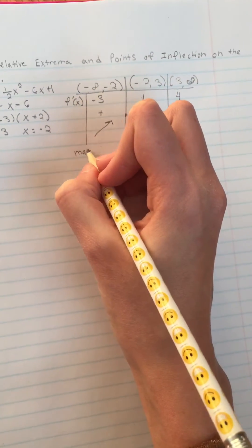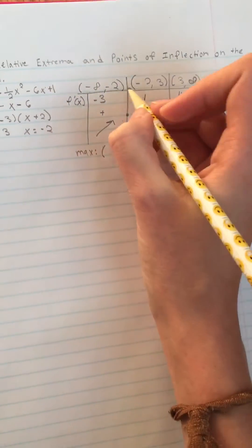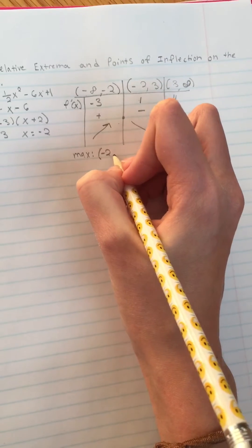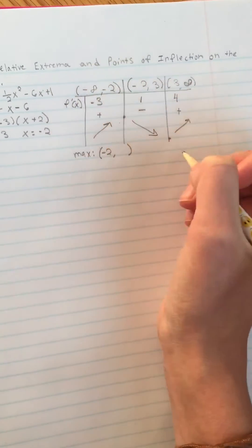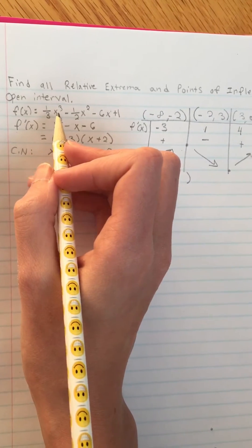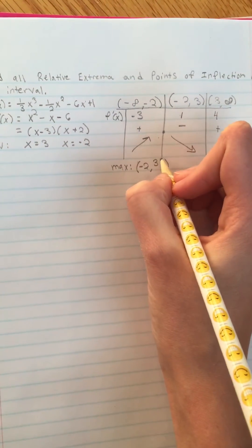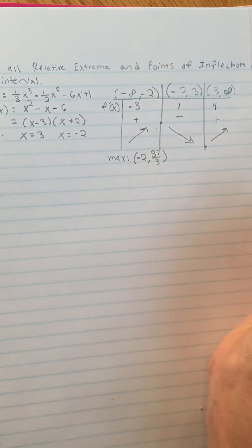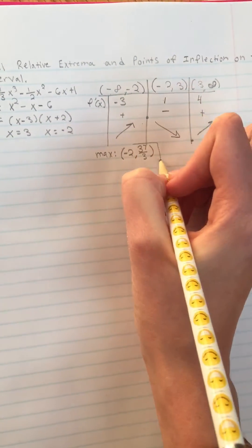So now for your max, we're going to find the exact point by using this negative 2 as the x value, and then to find the y value you just plug the x back into the original equation here, and that is going to give you 37 over 3. I did it ahead of time on a calculator so you wouldn't have to watch me do it.